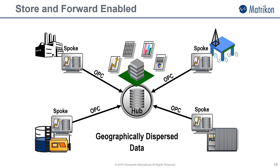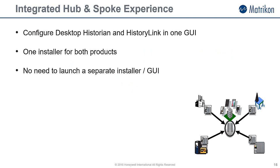This was possible in the past using Matricon OPC Desktop Historian and HistoryLink. In the new version, Matricon makes it easier for you to install and configure this system. When you install Matricon Desktop Historian, you are given the option of a standalone or hub and spoke installation. If you choose hub and spoke, Matricon HistoryLink is also installed. Configuration is also covered — both products are integrated into the same GUI for ease of use.